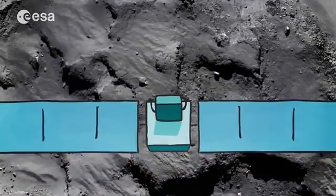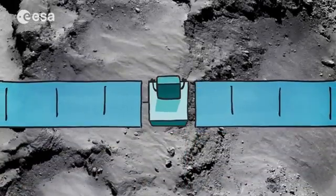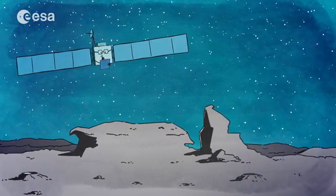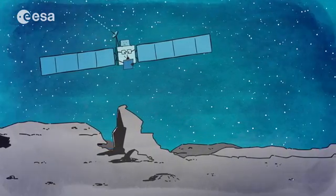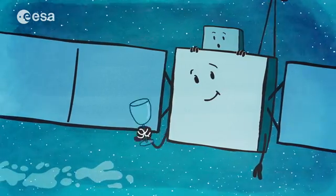There were craters, cliffs, and boulders the size of houses. Rosetta spent many weeks studying the surface of the comet, sending lots of information back to Earth.